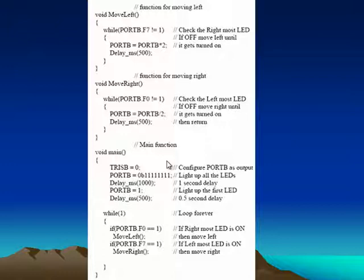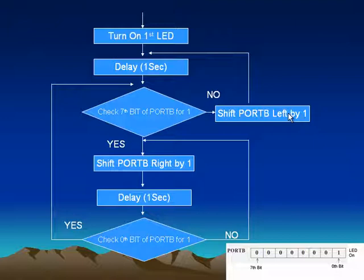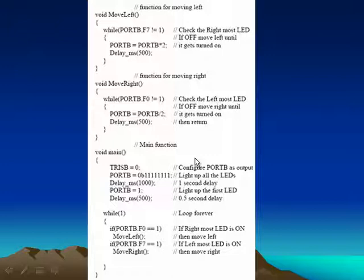This is the C program we are going to implement. Let's see what are the major sections of this program. There are two procedures or two functions implemented: MoveRight and MoveLeft. When we compare this program with our flowchart, you can see ShiftPortBeLeftByOne and ShiftPortBeRightByOne. These two procedures are implemented in C programming language.